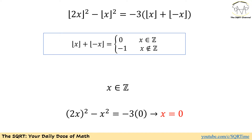This simplification is really useful for our equation. We can now handle the integer case. If x is an integer, then floor of 2x is just 2x and floor of x is just x. The right-hand side simplifies using floor of x plus floor of negative x equals 0, giving us 3x squared equals 0, so x must be 0. Since x equals 0 is an integer, all conditions are satisfied.